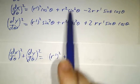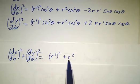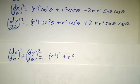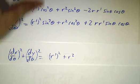The r squared sin squared plus r squared cos squared just gives you r squared. And these other terms cancel. So you get that dx dθ squared plus dy dθ squared is just r' squared plus r squared with no θs left over.